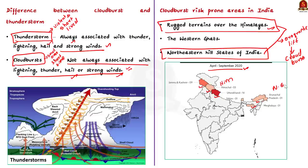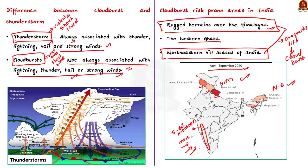Cloudburst in India is not just limited to the Himalayas and northeastern region — it also occurs in the Western Ghats, mainly during the monsoon season. During monsoon, moisture-laden winds from the Arabian Sea approach the Western Ghats. Once they reach the Western Ghats, they are orographically lifted, causing cloudburst. This is why during monsoon, you hear news about flooding in Kerala and Karnataka.